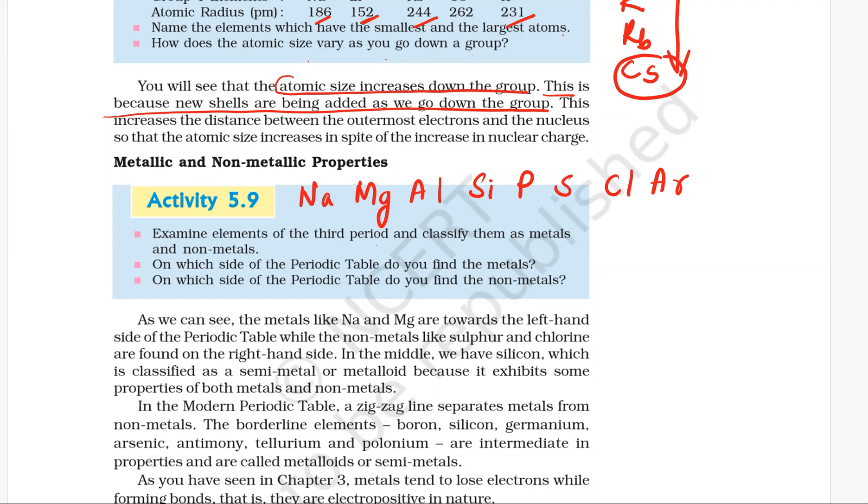Classify them as metals and non-metals. These three are metals. These are non-metals, and this one is metalloid. Silicon is metalloid.